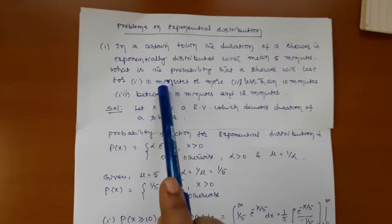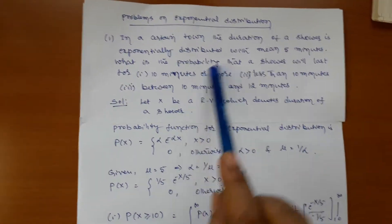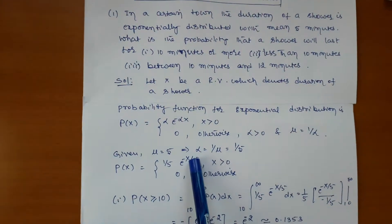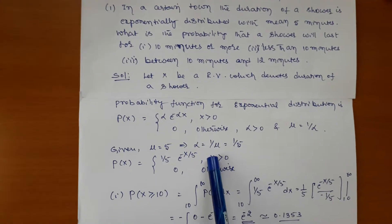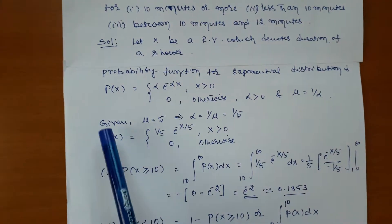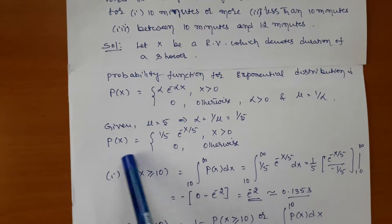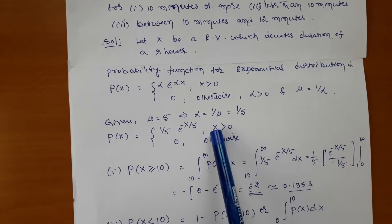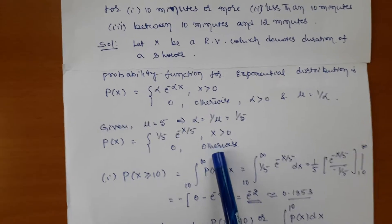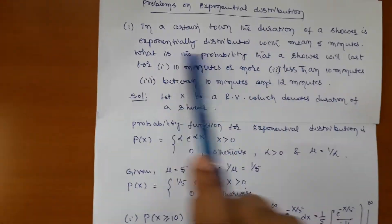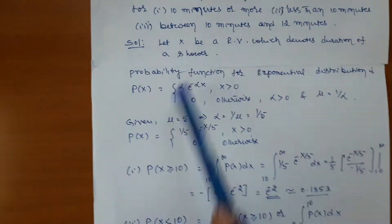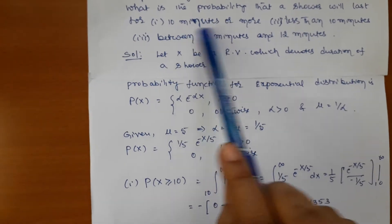From the problem, the mean value μ is given. For exponential distribution, α = 1/μ. Since μ = 5, we get α = 1/5. Substituting into the probability function, we get f(x) = (1/5)·e^(−x/5) for x > 0, and 0 otherwise. This is our probability density function based on the given data.